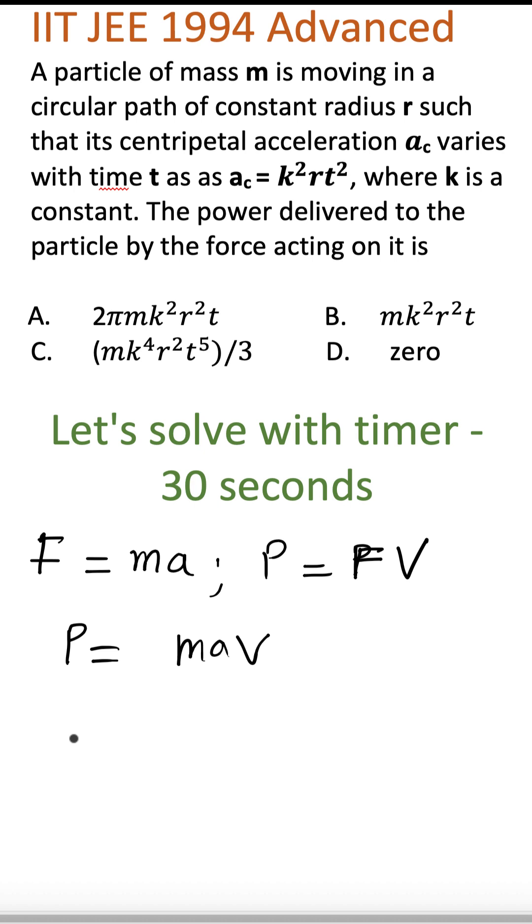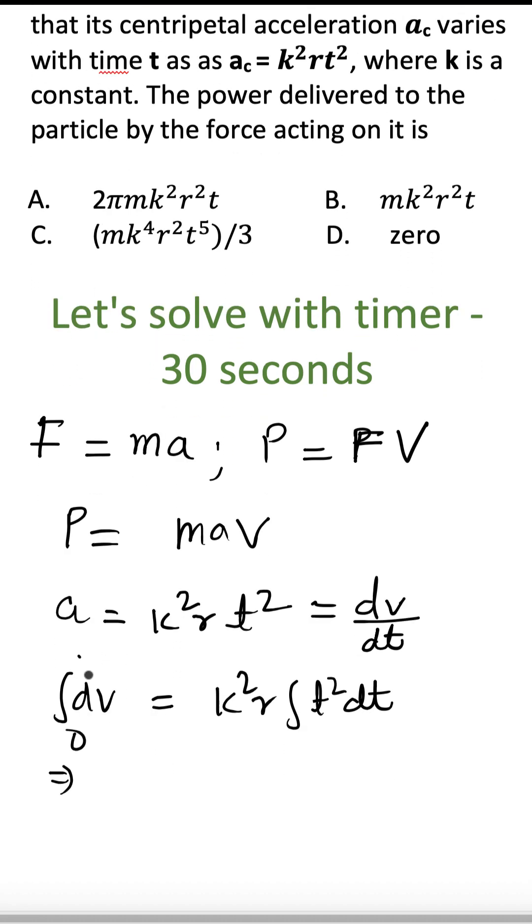Now a is given. So a is k square r t square. So we can write a as dv by dt. r is constant, k is constant. So we can simply compute v as k square r t square dt. 0 to v, 0 to t. And we get v as k square r t cube by 3.